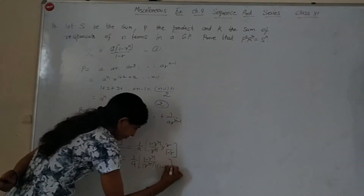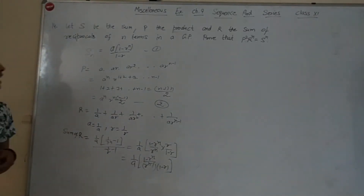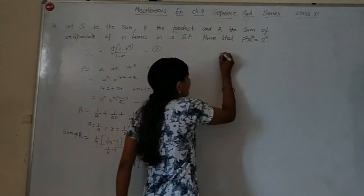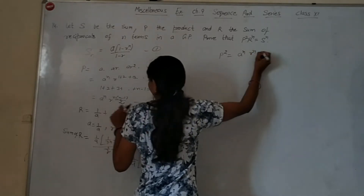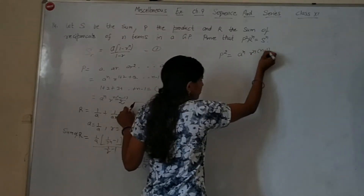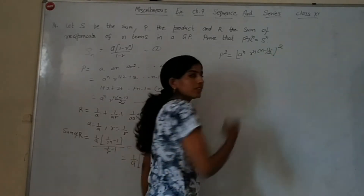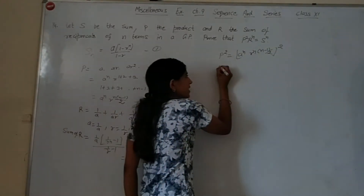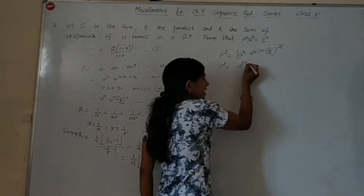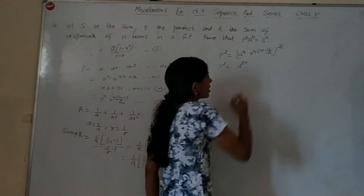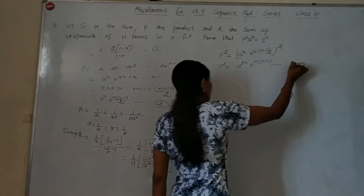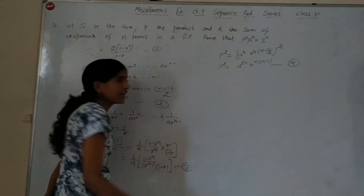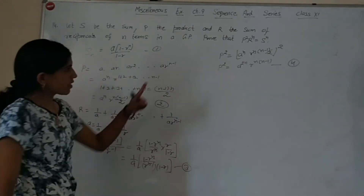Now we need to prove P² · Rⁿ = Sⁿ. P² = (aⁿ · r^(n(n-1)/2))² = a^(2n) · r^(n(n-1)).